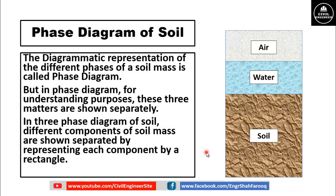As earlier discussed, all these components are in blended form, but for deriving equations and understanding the concept of soil mechanics or geotechnical engineering, the three main constituents of the soil mass are shown separately by rectangles. This diagrammatic representation of soil is known as the three-phase diagram of soil.